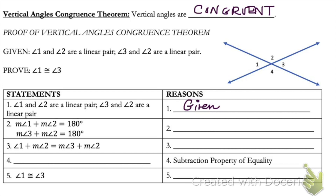The very first thing we want to do is write down our given information. If we know that angle one and angle two are a linear pair, and angle three and angle two are a linear pair, by the linear pair postulate we know they must be supplementary. So we can write: the measure of angle one plus the measure of angle two equals 180 degrees, and the measure of angle three plus the measure of angle two also equals 180 degrees.